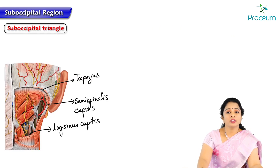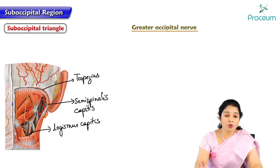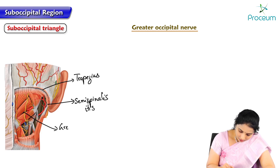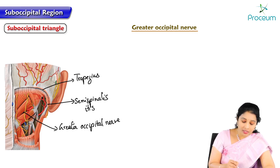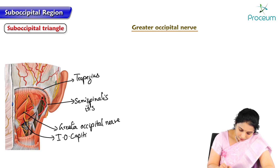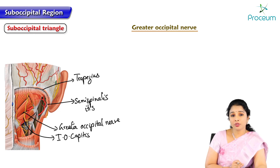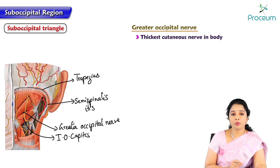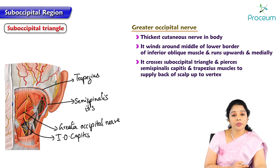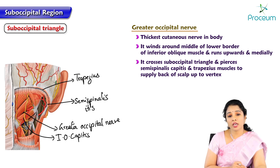Next, we shall talk about a structure which is a content of the roof: the greater occipital nerve. We can see the greater occipital nerve winding round the inferior obliquus capitis muscle. The unique feature of this nerve is that it is the thickest cutaneous nerve in the body. It winds around the middle of the lower part of inferior obliquus capitis and runs upwards medially, crossing the suboccipital triangle.